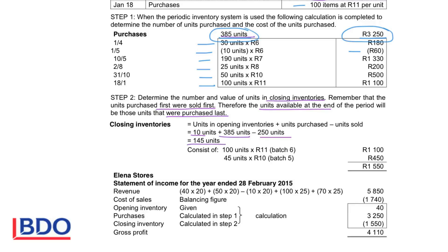Since we sold all the opening balances and earliest purchases first, the units definitely left over are the last ones bought. That is 100 units at R11, totalling R1,100. We have 145 units left over, so from the second-last batch we have 45 remaining units at R10 each, giving R450. Therefore the total value of closing inventory is R1,550.